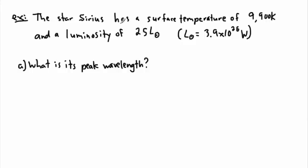It's actually a brighter star, so let's talk about this. It has a surface temperature of 9,900 Kelvin, and it has a luminosity of 25 times L☉ — that symbol means the luminosity of the sun. So we're saying it has a luminosity 25 times that of the sun, where the luminosity of the sun is approximately 3.9 × 10²⁶ watts. Remember, that tells you the energy per unit time.